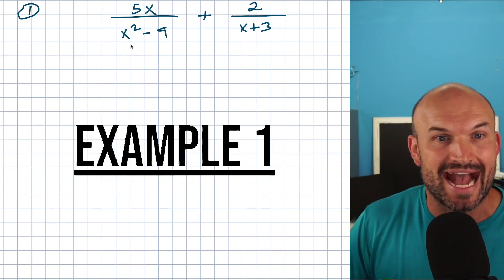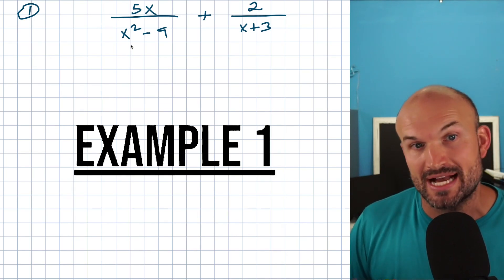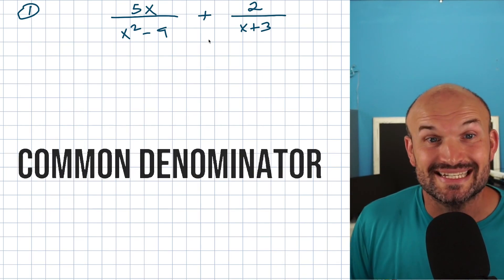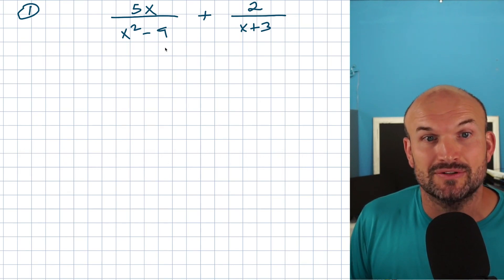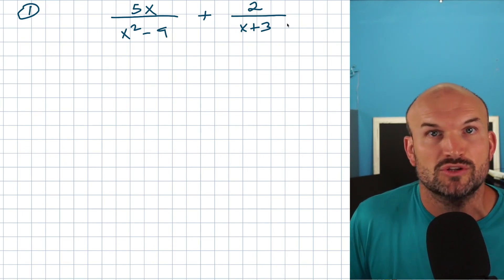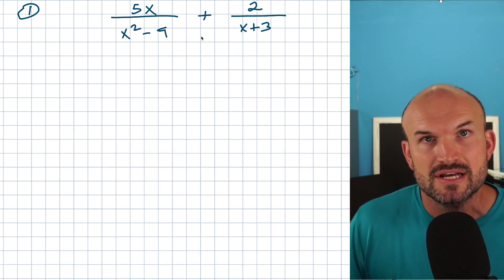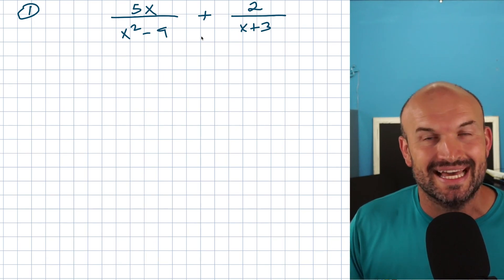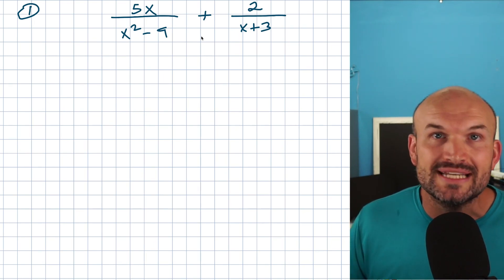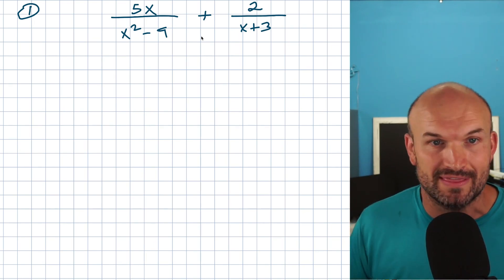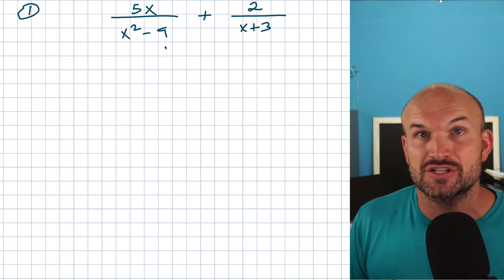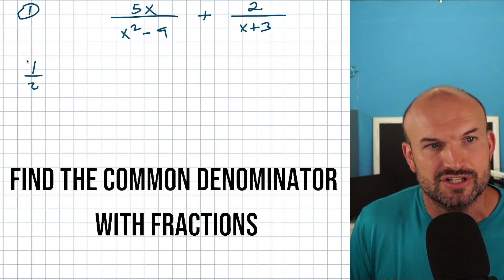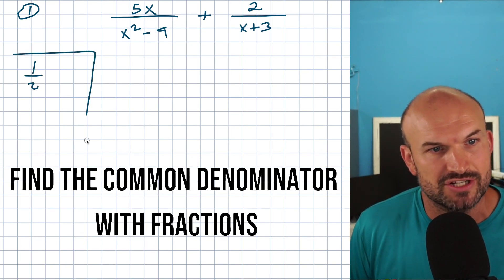One of the main things we've talked about when adding and subtracting rational expressions is you have to get the common denominator. The fastest and easiest way to find the common denominator was to always just multiply your two denominators when dealing with polynomials. But there's a caveat to that — sometimes you have denominators that are actually going to be shared. Let's go back to our fractions as an example.